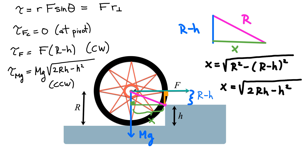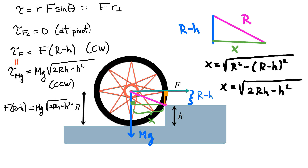As long as the torque from the applied force is slightly bigger than the torque from the weight, there's a net clockwise torque. Setting both torques equal gives the equilibrium condition: F(r − h) = mg√(2rh − h²). Solving for the minimum force, we get F = mg × √(2rh − h²) / (r − h).